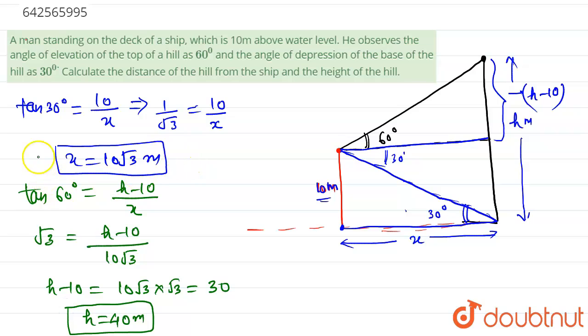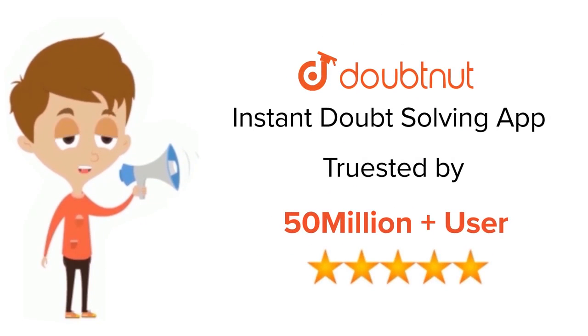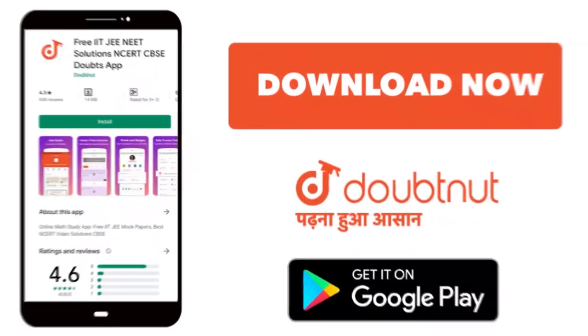So these are our required answers: the first one is x, that is 10 root 3, the second one is h, that is 40 meters. h is the height of this hill and x is distance of ship from the hill. So this is our answer. Thank you. For class 6 to 12, IIT-JEE and NEET level, trusted by more than 5 crore students, download Doubtnet app today.